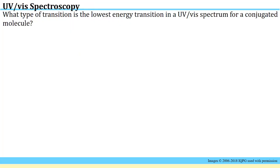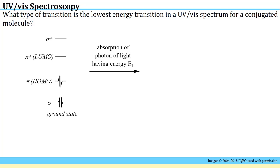One of the first things we learn in the primer about the interaction of UV and visible light with molecules is the type of transitions that they cause. This question is asking what type of transition is the lowest energy transition in a UV-vis spectrum for a conjugated molecule. If you have a conjugated molecule, you will have pi bonds in addition to the sigma bonds, and each bond has two electrons in it.